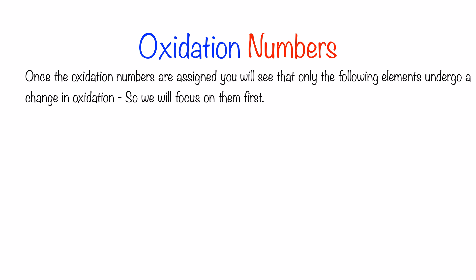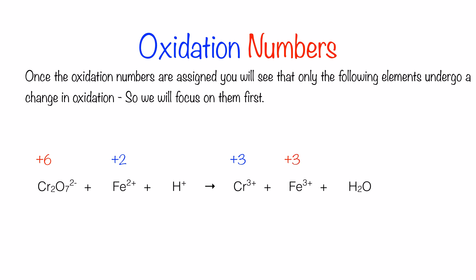Let's look at the equation once again. The oxidation number of chromium is found to be +6, Fe²⁺ is +2, Cr³⁺ is +3, and Fe³⁺ is +3. Chromium with an oxidation number of +6 changes into Cr³⁺, therefore it's undergoing reduction. Iron, Fe²⁺, on the other hand, changes into Fe³⁺ — there is an increase in oxidation number, therefore Fe²⁺ is being oxidized.